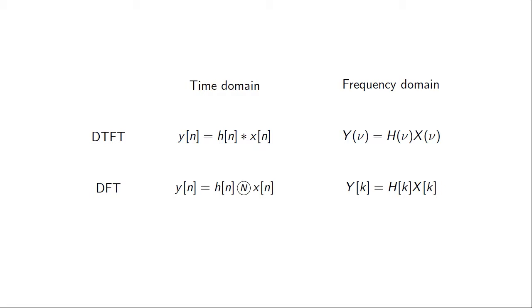So what we'll look at in this video, and in the following video as well, is how can we use the discrete Fourier transform as a proxy for working with the discrete time Fourier transform? Or more precisely, when does the circular convolution correspond to the regular convolution?